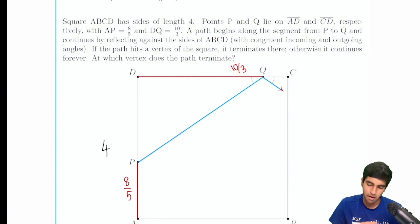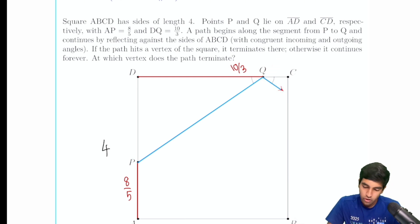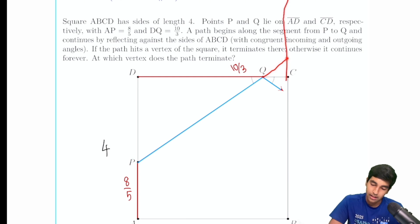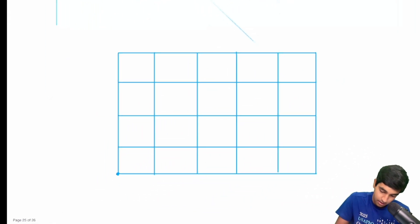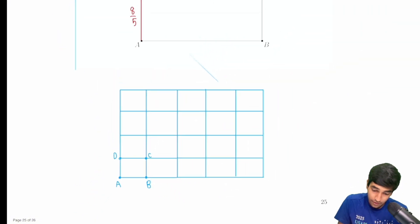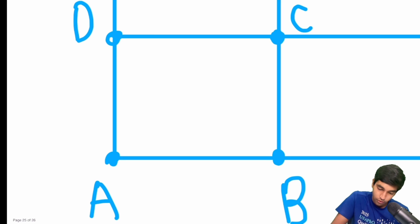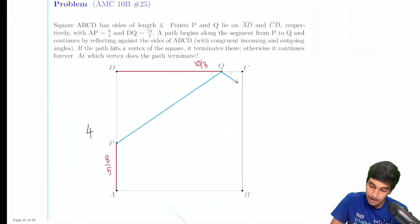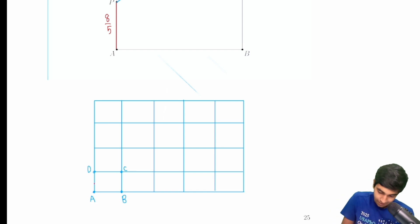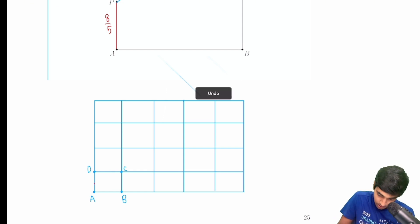The key trick for these kinds of problems is to always reflect. Rather than dealing with the reflection directly — which is too hard — we just let the line pass through and notice that we have a reflected grid. So instead of reflecting, we continue this line forever until it hits some point, wherever that might be.